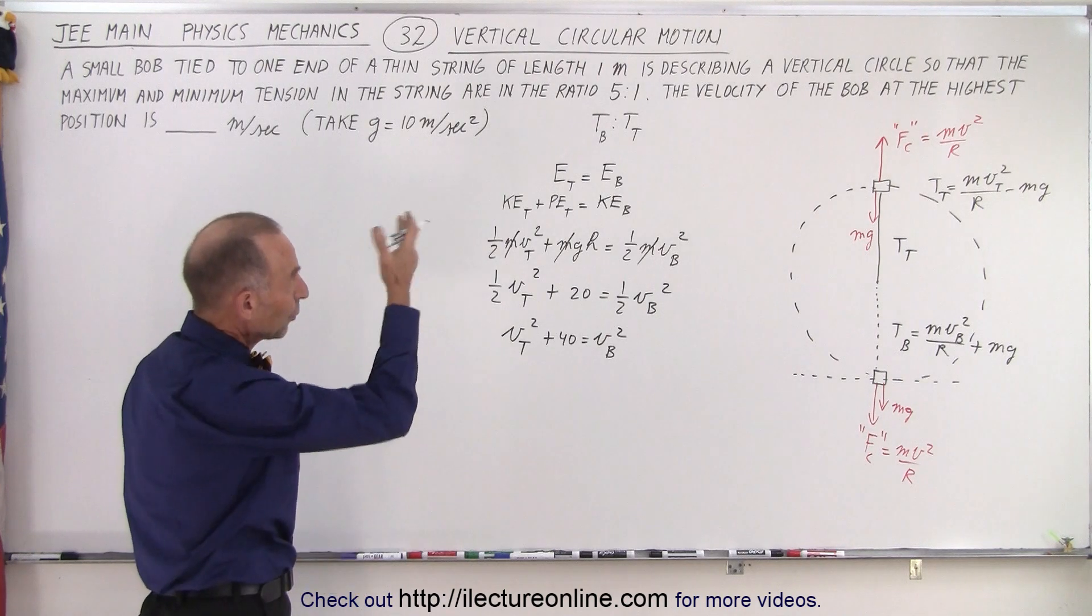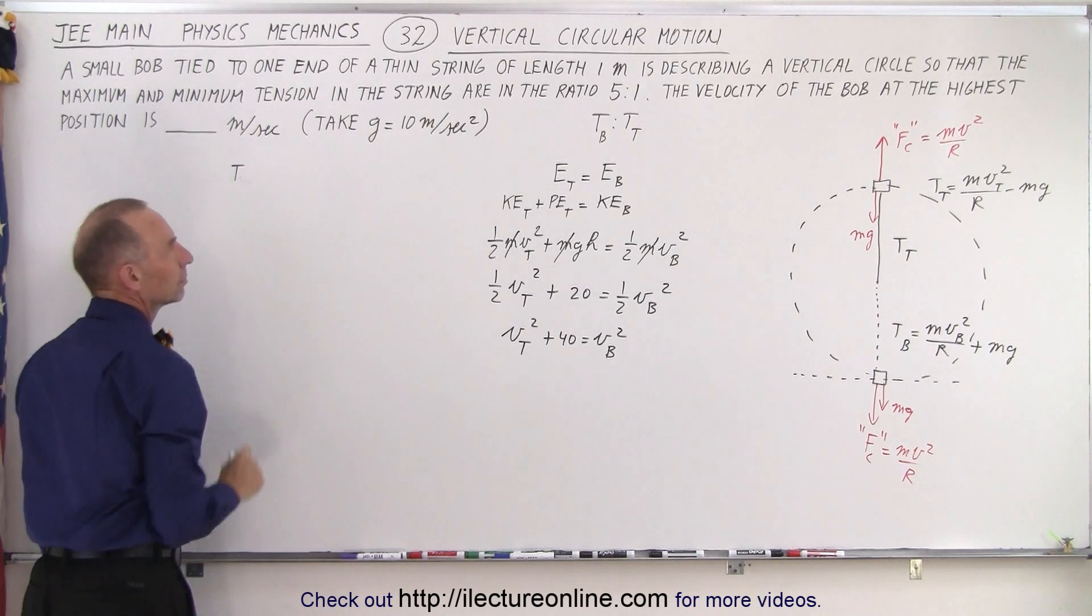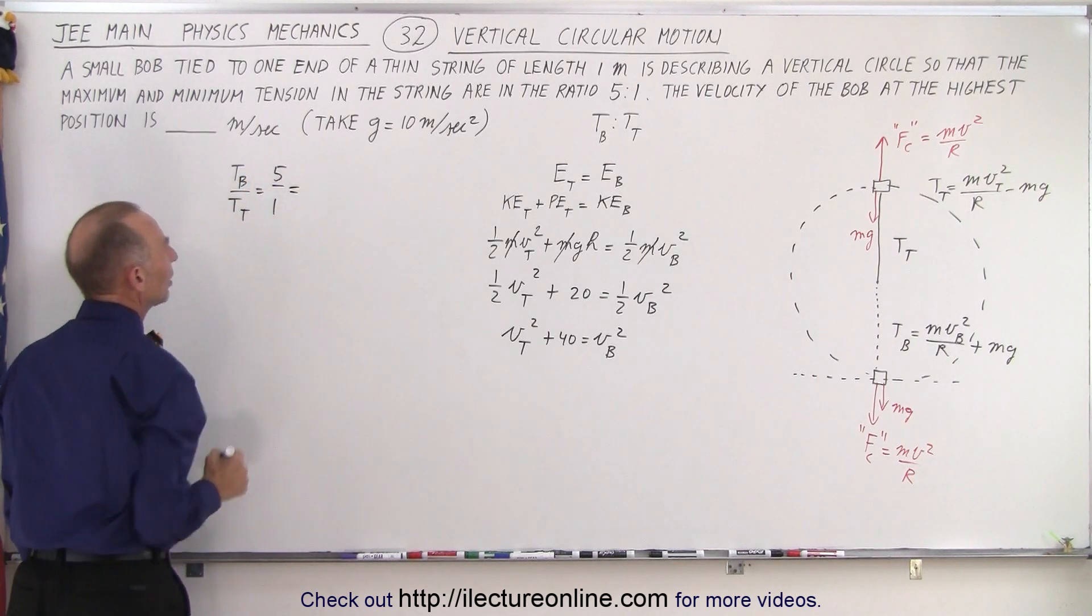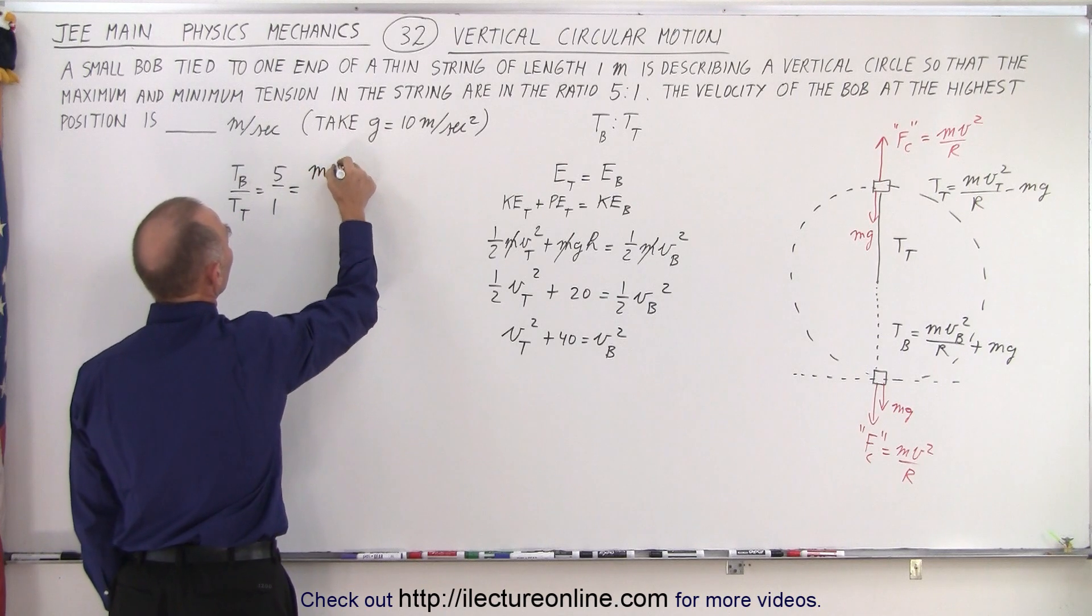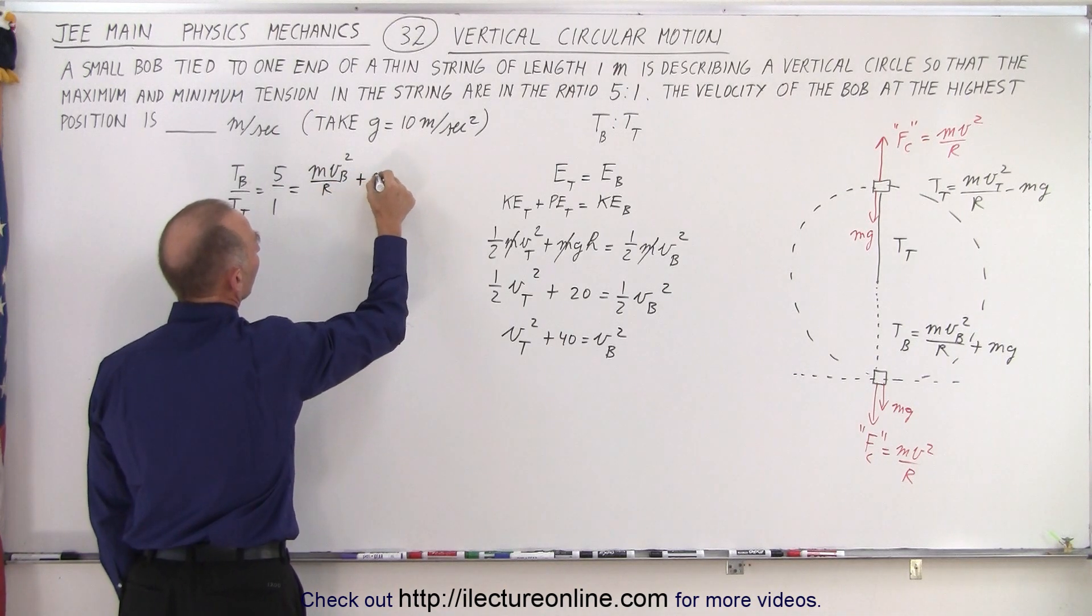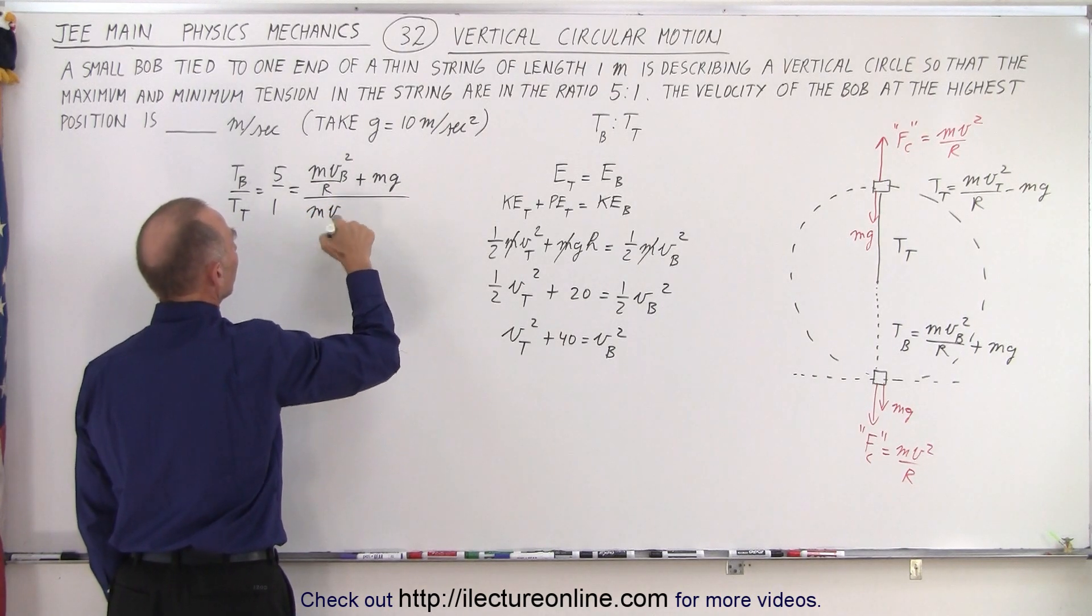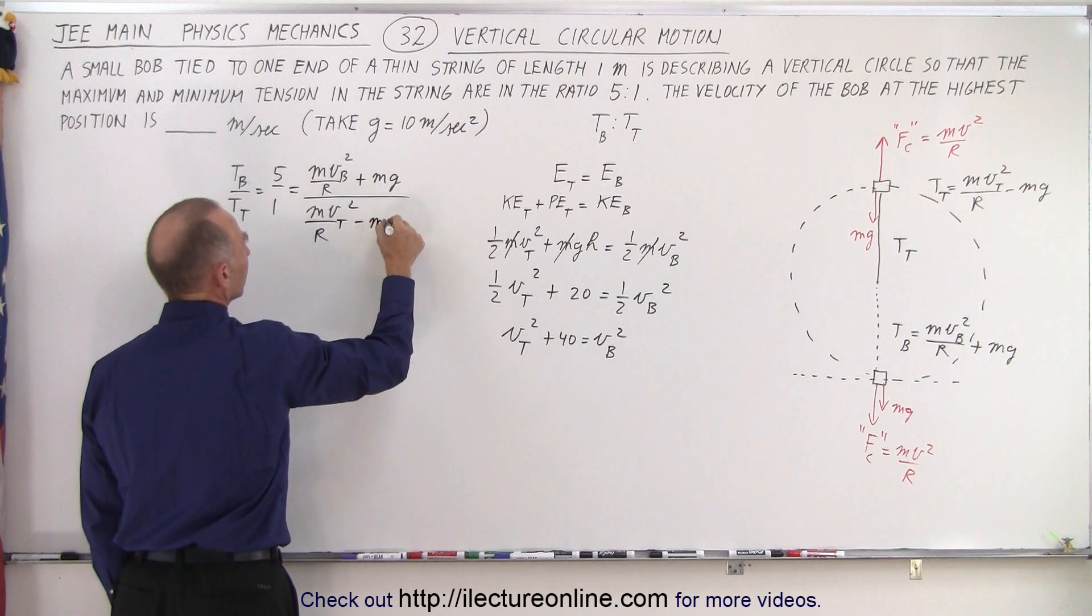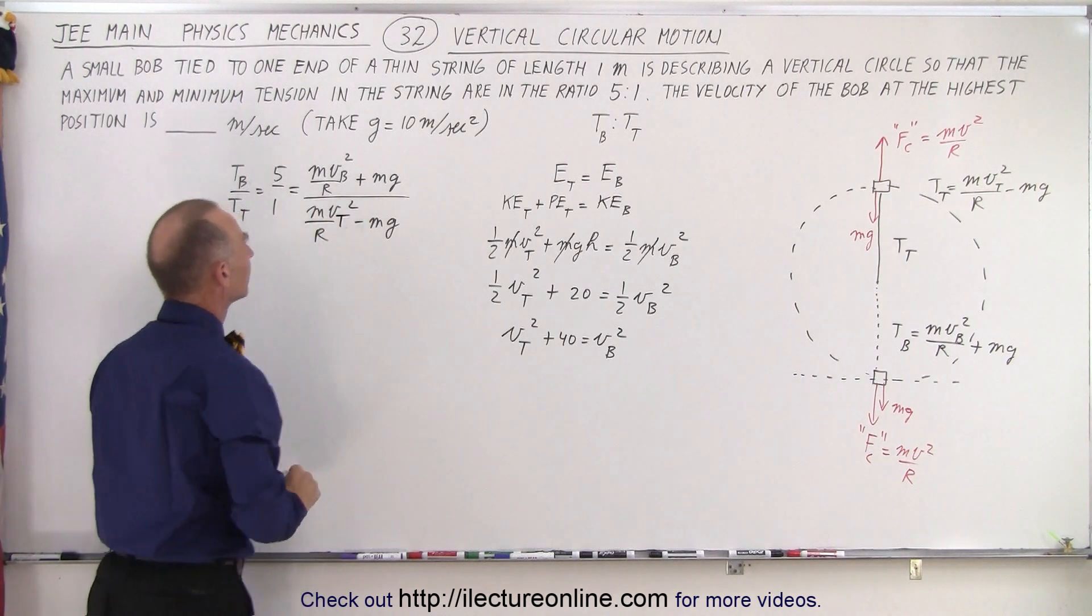So now I think we're ready to do that ratio, the 5 to 1 ratio. So now we can say that t bottom over t top, which is 5 to 1, which is equal to—now we can see that the tension at the bottom is going to be mv squared at the bottom squared divided by the radius plus mg. And in the denominator we have mv top squared, because now we're at the top, top squared over the radius, and instead of plus it's going to be minus mg.